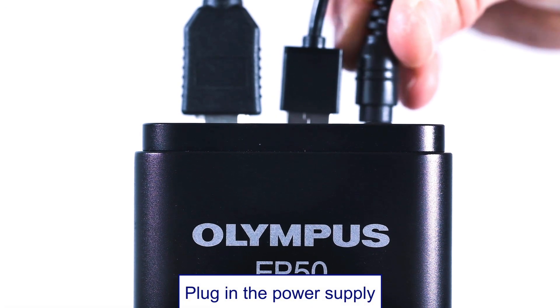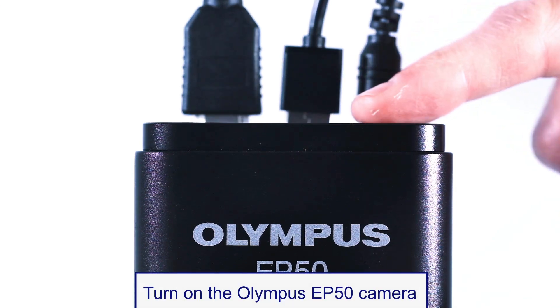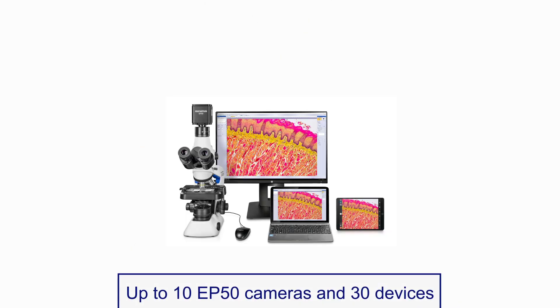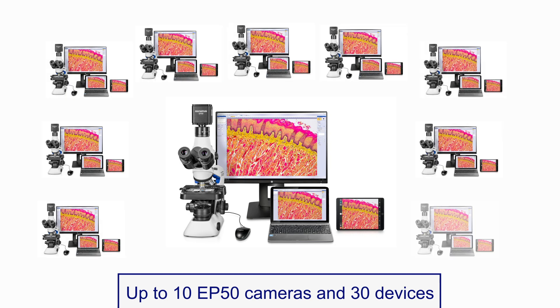Then plug in the power supply cords and turn on the Olympus EP50 cameras. Configuration options range from a one-camera setup to a predefined configuration of several cameras, which can be prepared by your IT department.